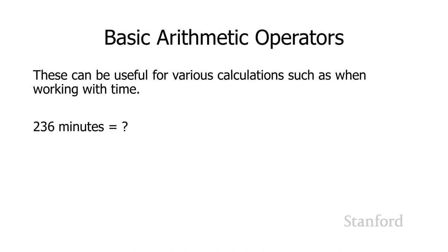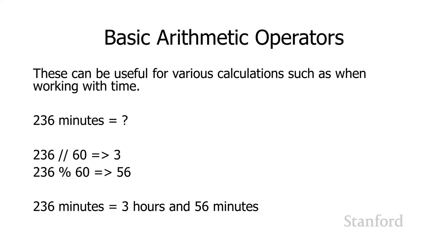Why would I want to do this? One common reason is you're working with times. If I've got 236 minutes and I want to know how many hours that is, I can take the 236, use integer division by 60, which will give me 3. Then I can use the modulus operator, which gives me 56. So I can say 236 minutes is 3 hours and 56 minutes.